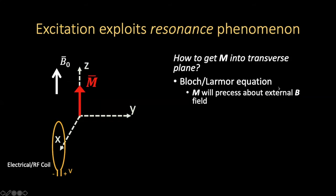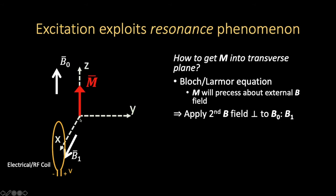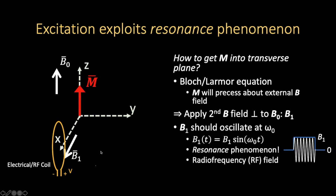The Bloch equation and the Larmor equation give us a hint: by knowing that M will precess about an external field, if we apply a second magnetic field along an axis perpendicular to our main magnetic field, the magnetization will start to precess around this second field. But it can't be a static magnetic field, otherwise we just get alignment along the vector sum of B0 and B1. The extra ingredient needed is that B1 should oscillate at our original Larmor frequency — B1 oscillates like a sinusoid at the Larmor frequency. This is the resonance phenomenon in MRI or NMR.